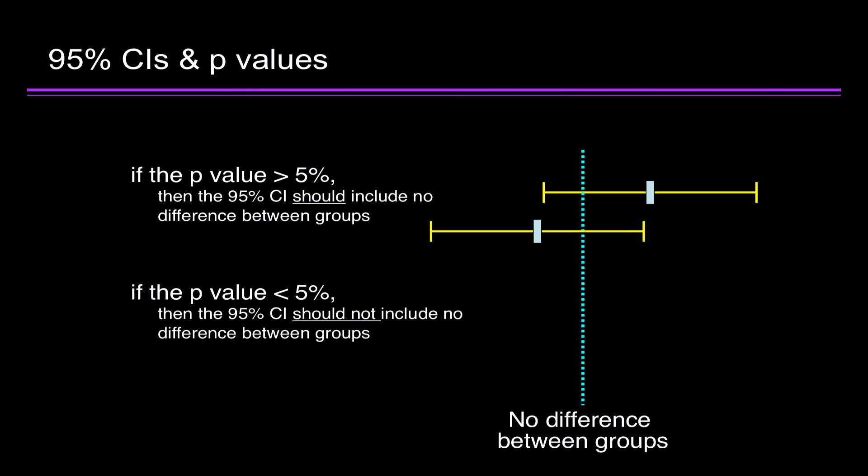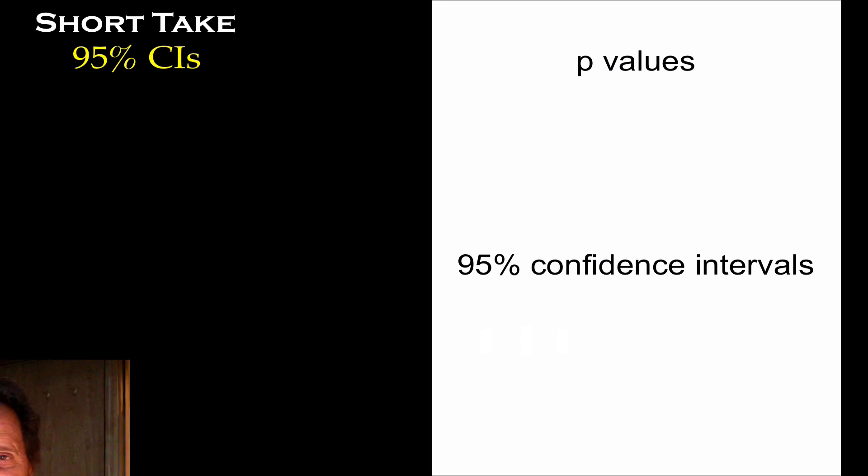If the p-value is less than 5%, then the 95% confidence interval should not include no difference between the two groups. It might be over here, or it might be over here, but it doesn't include no difference between the two groups.